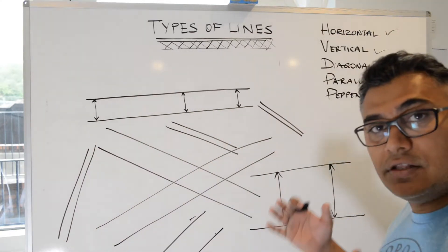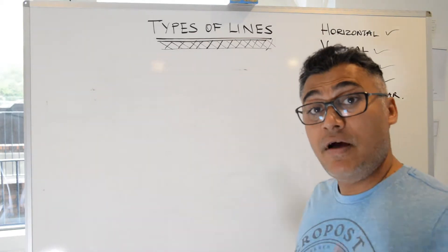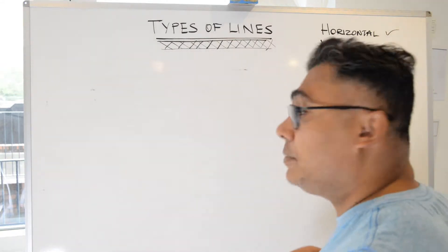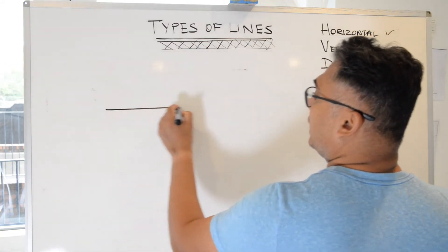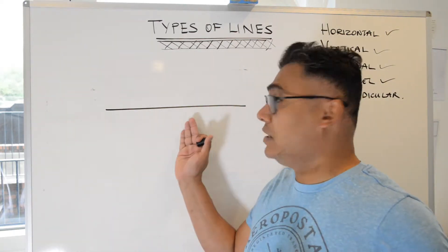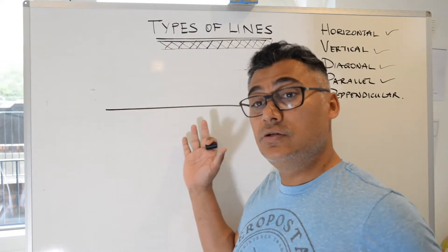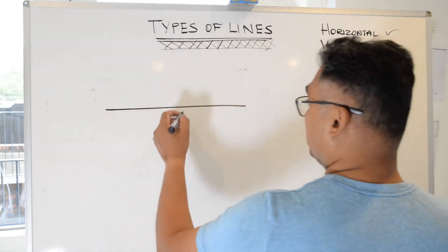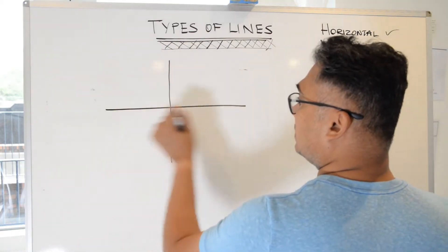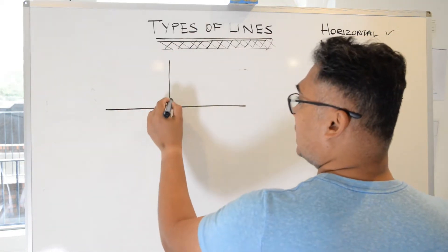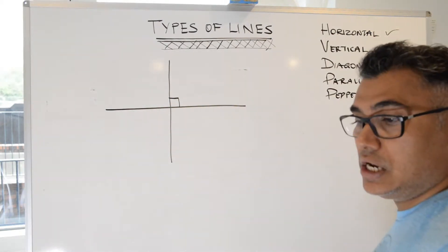As long as they're the same distance apart, they are parallel. Next we have perpendicular lines. Perpendicular lines are when you have a line, and a line that is perpendicular to it is running at 90 degrees to that line. So once you have a line like that, a line bisecting it — cutting through it at 90 degrees — that is a perpendicular line.